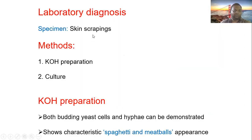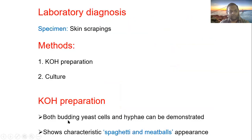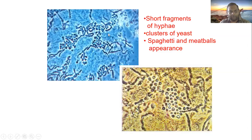For laboratory diagnosis, skin scraping is performed using the blunt end of a scalpel. A KOH preparation and culture are done. In KOH we can see both budding yeast cells and hyphae demonstrated together — the classic spaghetti and meatball appearance. Short fragments of hyphae and clusters of yeast cells are seen.